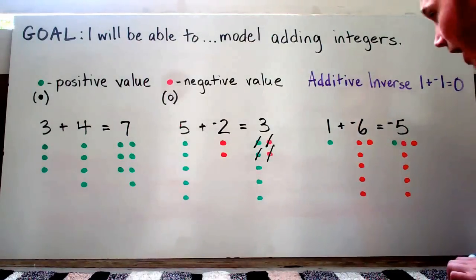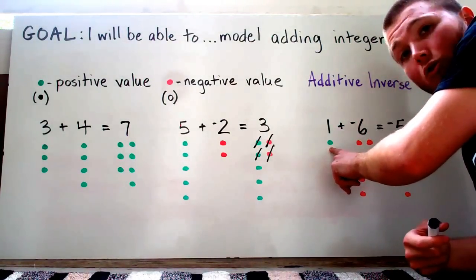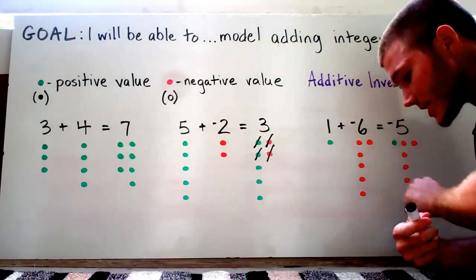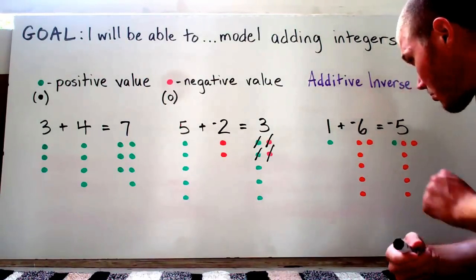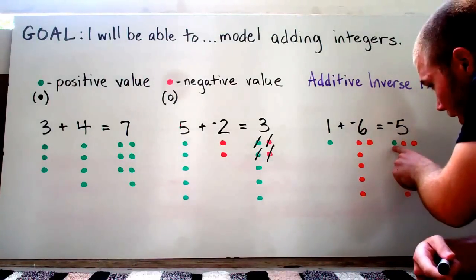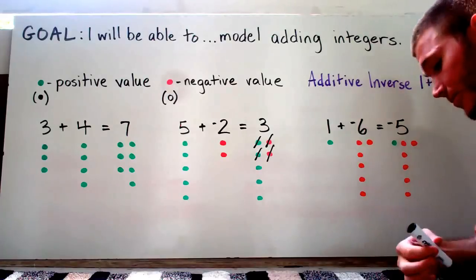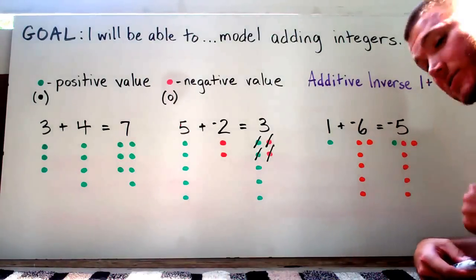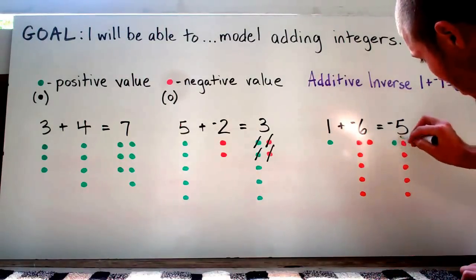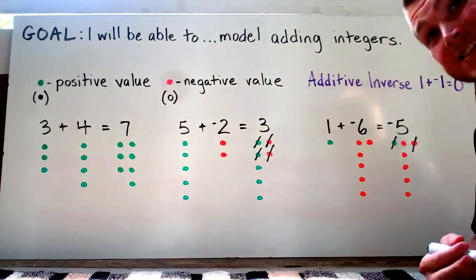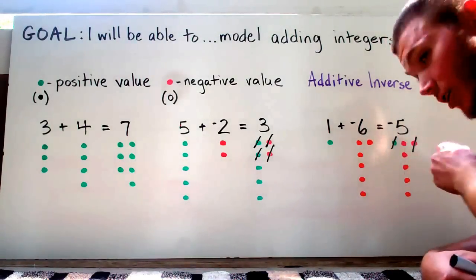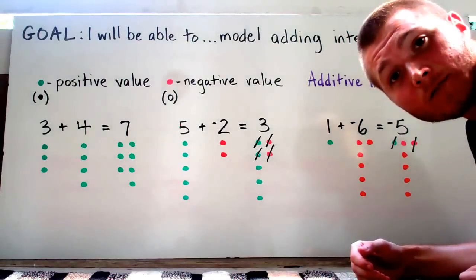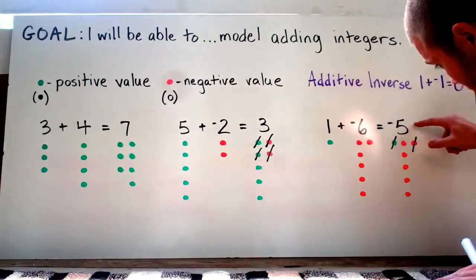The last problem on this board: positive one — one green dot — plus negative six, one, two, three, four, five, six red dots, six negative units. When I add these up, I combine them — I bring the one green dot over and the six red dots over. I'm going to cancel out every positive unit for every negative unit. One green, one red — that's it. Once you're left with only one color, you're done. And it looks like we've got one, two, three, four, five red dots left. Since red dots are negative, my answer is going to be negative five.